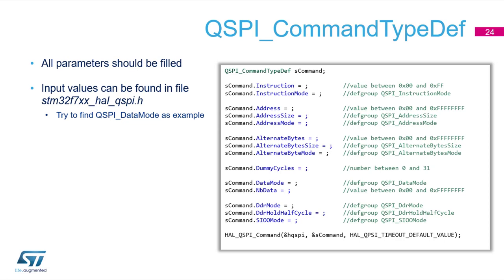Here you can see the HAL structure for command definition. As you can see, there are parameters for each phase of the data transfer: instruction, address, alternate bytes, dummy cycles, and data phase. Input values for parameters can be found in file stm32f7xx_HAL_quadSPI.h. All parameters should be filled to avoid uninitialized access.